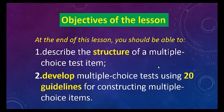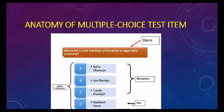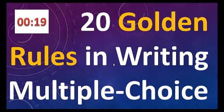Let's shift to the heart of the matter. The multiple choice test item has two main components: the stem and the options or alternatives. In this case we have four of them. One of the alternatives is the best or correct answer and it's called the key — the key which will open the door of the question. The others are called distractors because they are supposed to distract those who do not know the answer.